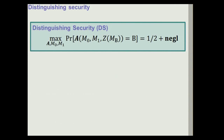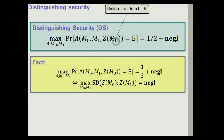A slightly easier way to define security is distinguishing security, the traditional approach where the adversary gets two messages M0 and M1, and an encryption of one chosen uniformly at random, and must guess which one was encrypted. We require the adversary must not be able to guess correctly with probability much larger than one half. This turns out to be equivalent to requiring that the statistical distance between any two noisy encryptions of any two messages is negligible.